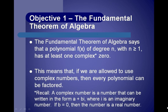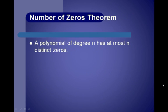This means that if we are allowed to use complex numbers, then every polynomial can be factored. We have a theorem called the Number of Zeros Theorem, and it says a polynomial of degree n has at most n distinct zeros. So if the degree is n, then we are looking for at most n solutions.